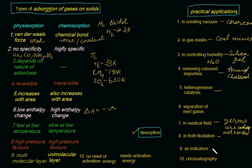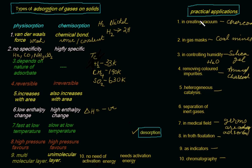Certain adsorbents are used as indicators, which help us to understand the precipitate formed or the end product of a reaction from its color. Chromatography is another important application of adsorption, finding use in analytical and industrial fields in a number of processes. So we have listed a few practical applications of adsorption.